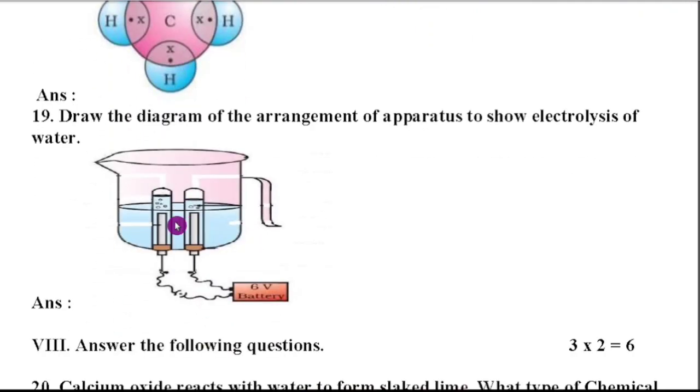The next one is, draw the diagram of the arrangement of apparatus to show electrolysis of water. So this is the diagram. They are not asking any labeling. So just you have to draw the diagram. That is enough.